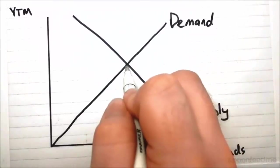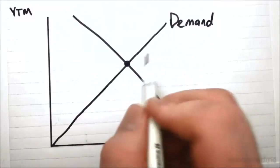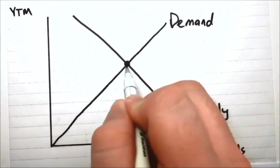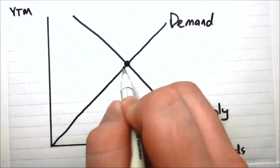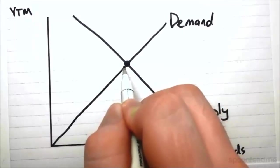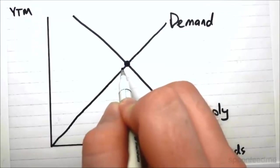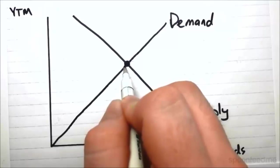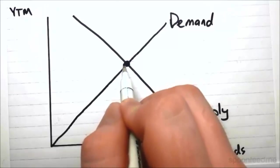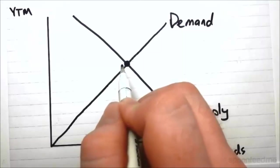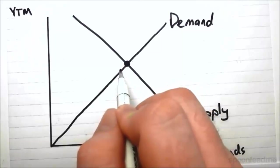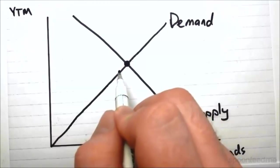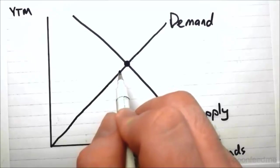So we have this little intersection point here. At this intersection point, this is the yield to maturity that we will typically see bonds selling at. And you will see that this is the case by considering what happens if bonds are sold at a different yield to maturity. So we make an assumption about the market that there's lots and lots of buyers and sellers and we assume that they are very well informed, which means that they know what yield to maturity other bonds are being sold at in the market.